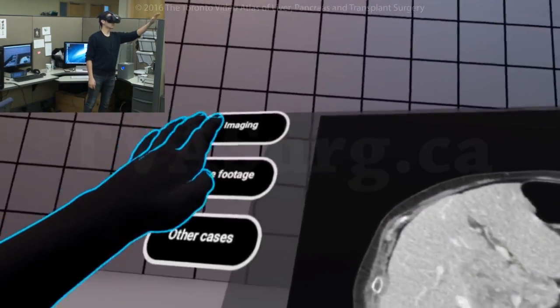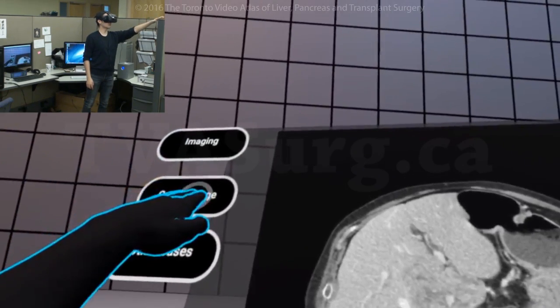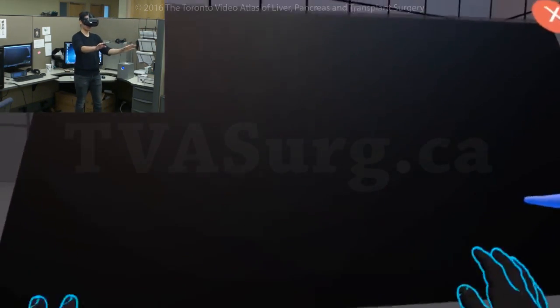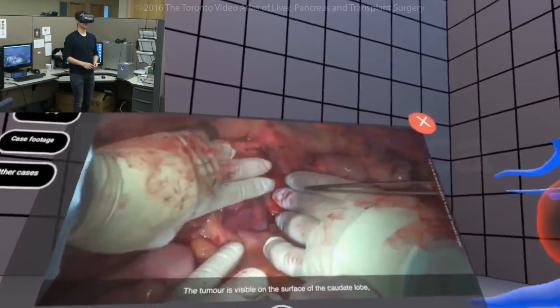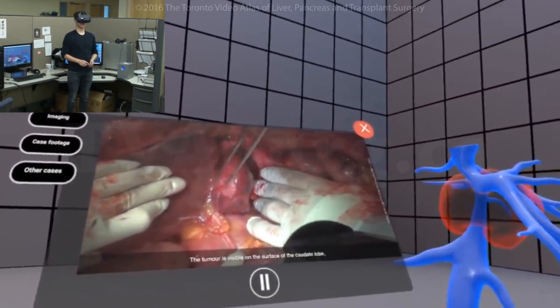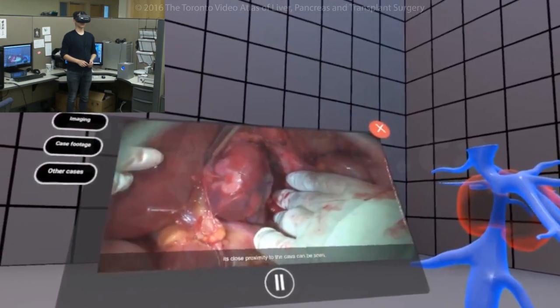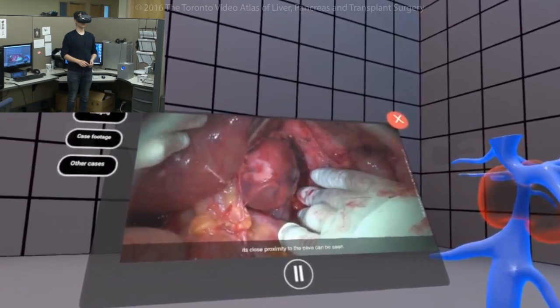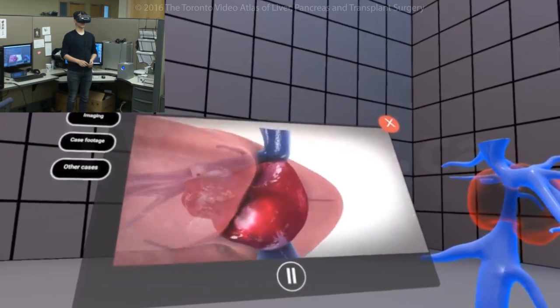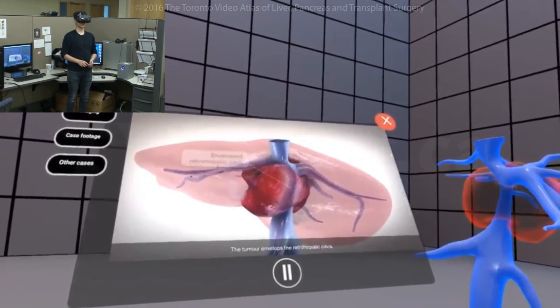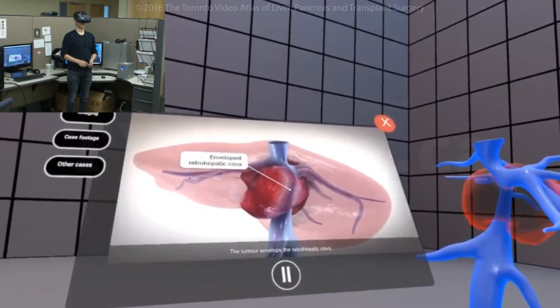Now, being a video atlas, of course, we have footage of the surgery of this case that we can check out. Here's a short clip. And this is showing the tumor in surgery. And just to reiterate things again, here's the tumor and it is again surrounding the vena cava.